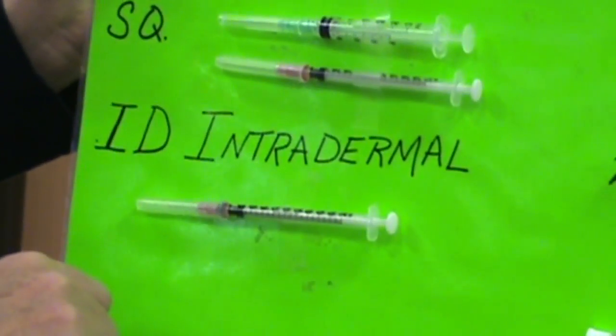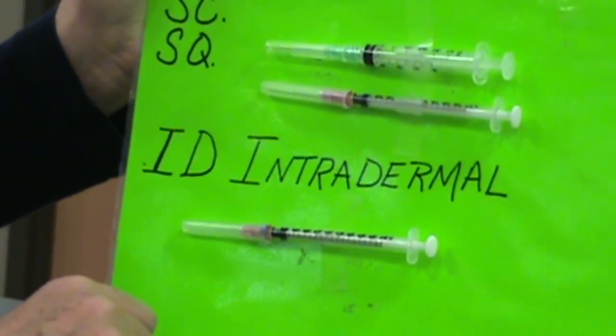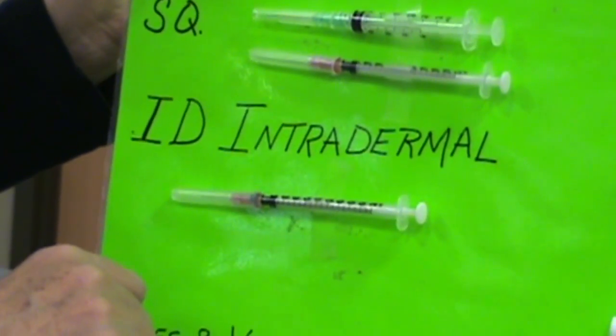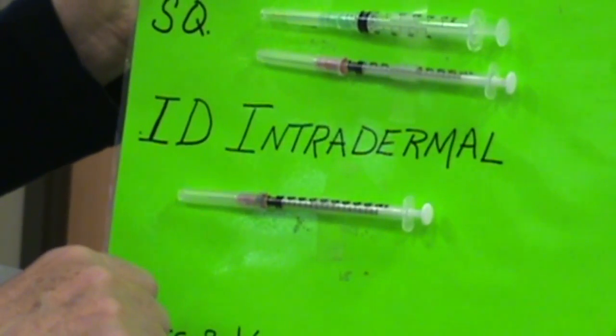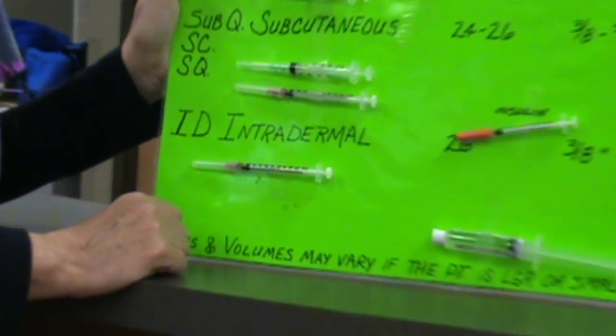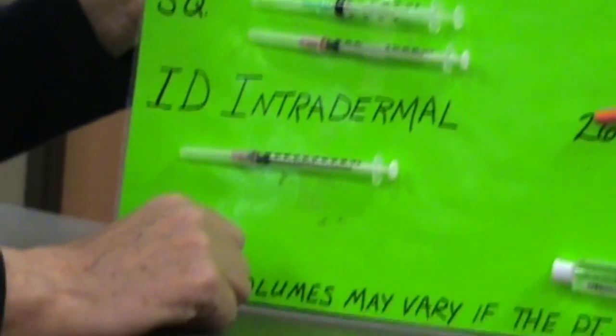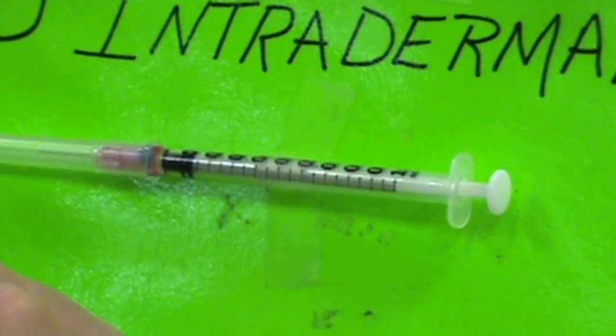And then down here, intradermal. Intradermal is usually given for a TB skin test, and that's about five to maybe ten degree angle. And it comes in milliliters, and you just give it very, very superficially.